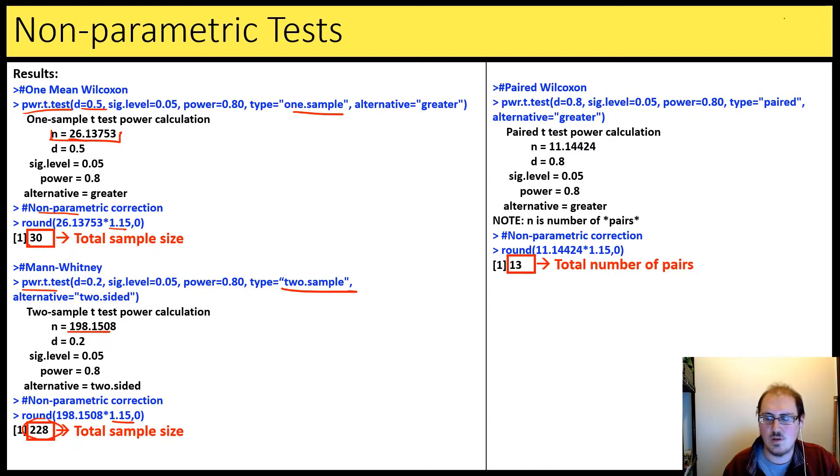Paired Wilcoxon, this should become familiar by now. Same thing, power t-test, but now it's type paired. Get an n of 11. Round up times 1.15 gets us the total number of pairs now is 13. So we need 13 pairs of twins. So 26 total individuals. Each twin will have another twin to go with it.